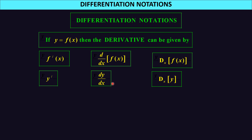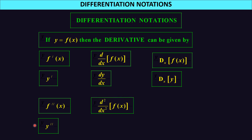It will also be necessary for us later to find the derivative of a derivative — that is the second derivative. So I can have f double prime x, or y double prime. Not y11 or f11. We can similarly have d²/dx² of f(x), or d²y/dx². So these are the notations we're going to use.